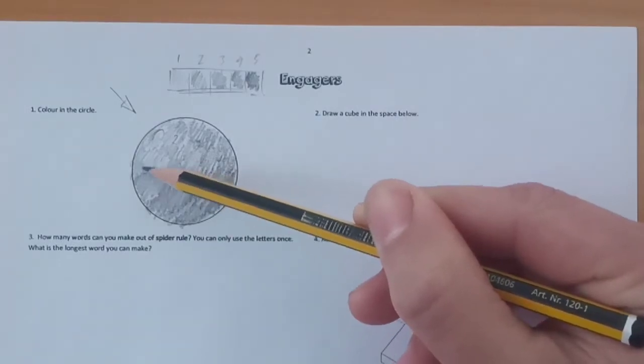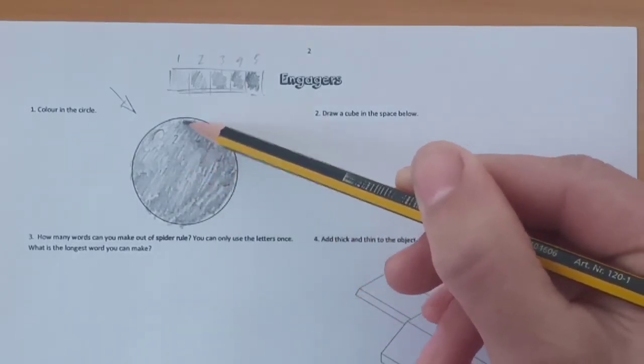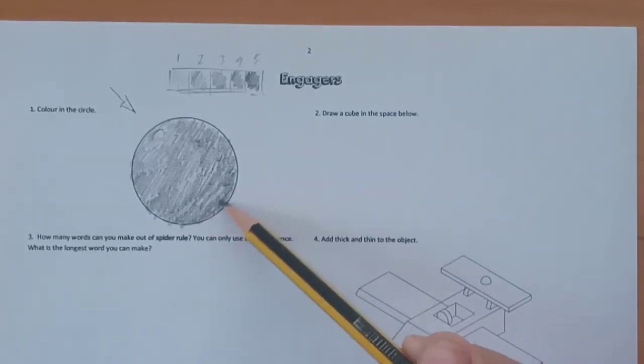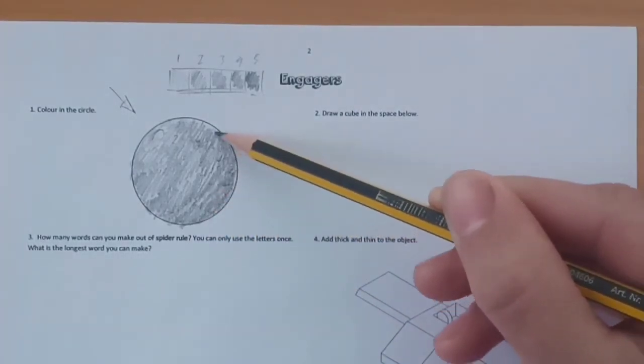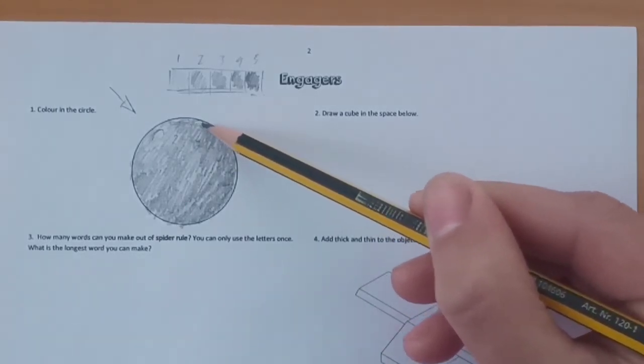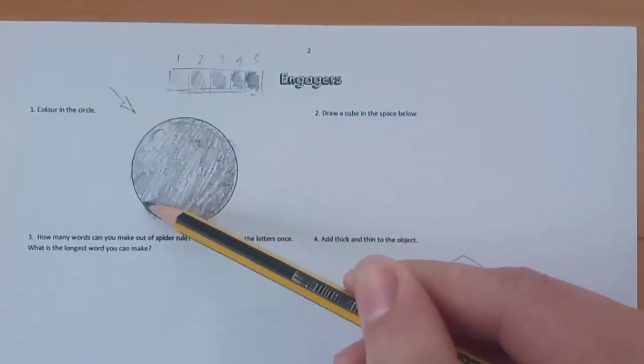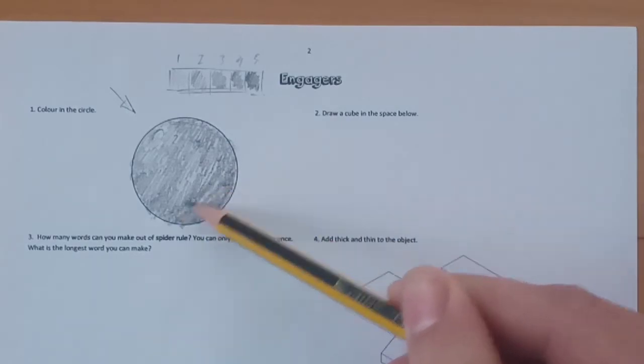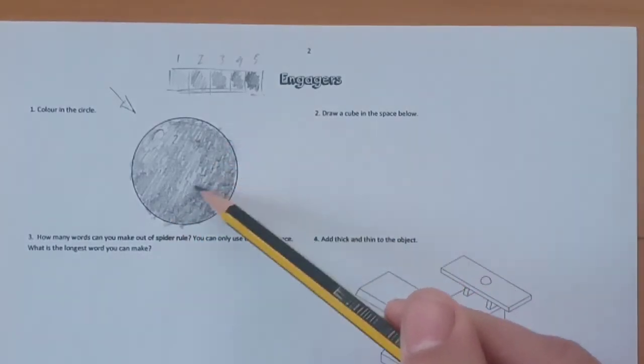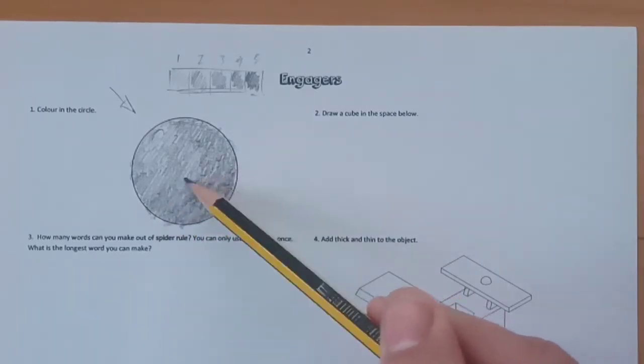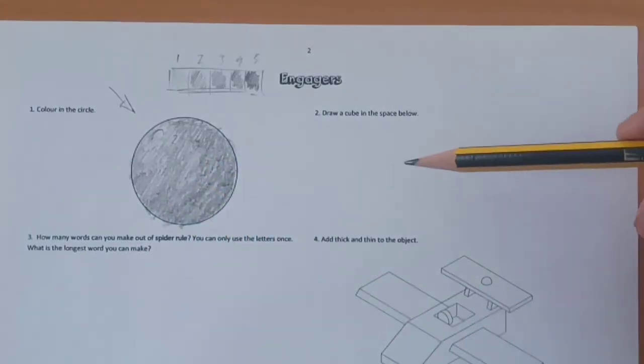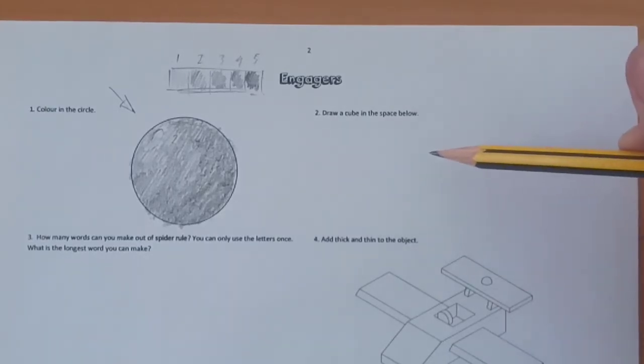But once you've got it roughly shaded, you can then just remove those gradations. You can darken it up a little bit if you want around the edges. And if you find that you've made it too dark in sections, you can always just take a rubber to the shape and lighten off sections. That is Engager 1. Obviously, you'll do a far easier job than me on this.